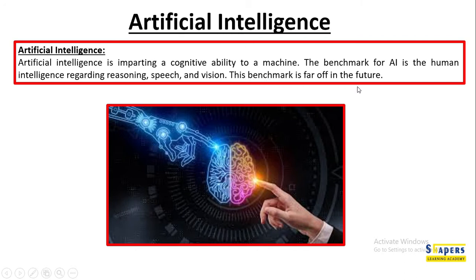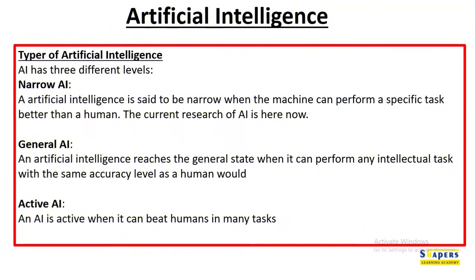Currently we are at level one of artificial intelligence. Artificial intelligence has three levels. The first is narrow AI. Artificial intelligence is said to be narrow when the machine can perform a specific task better than a human.